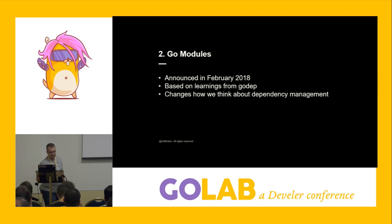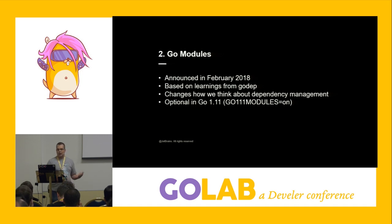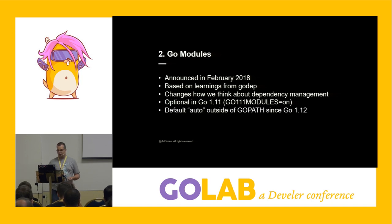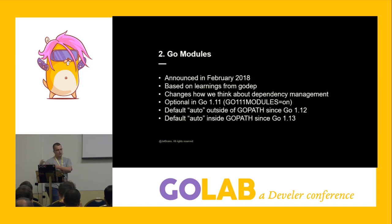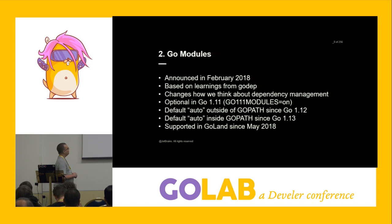Go modules was optional in Go 1.11 — you had to opt in by setting the environment variable GO111MODULES to 'on'. Default was off. In 1.12, it was turned on as 'auto' — when you are outside of GoPath, the Go modules feature would be enabled. From 1.13, Go modules will be enabled even if you are in GoPath, as long as the go.mod file is present.